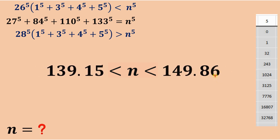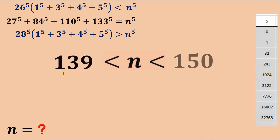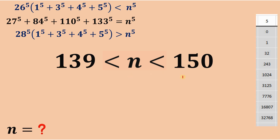Since n must be an integer — a whole number — we can say that n is between 139 and 150. So n is greater than 139 but less than 150, meaning n can be 140, 141, 142, all the way up to 149. There are multiple possible values, so we need to determine which one is correct.